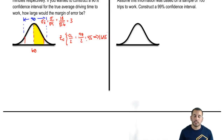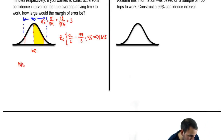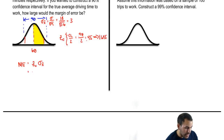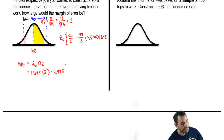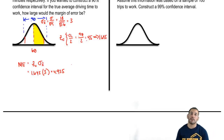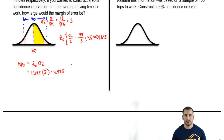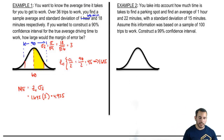Our margin of error is that Z critical times the standard error. So we get 1.645 times 3, and that gives us 4.935. That's basically how far above and below 60 we would go to get our full interval.